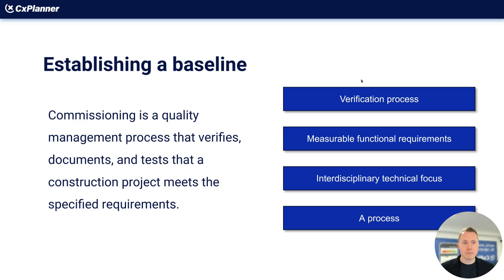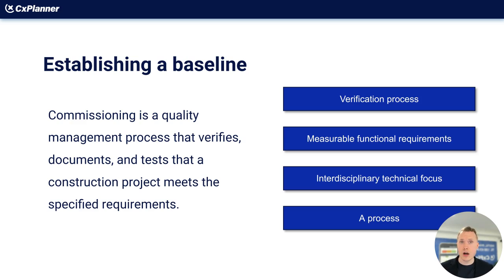The second item is measurable functional requirements. Every requirement in the commissioning process must be measurable — strictly defined so everyone knows when a requirement is fulfilled. Without those requirements, you don't have a commissioning process, because when you're doing testing or verification, you need to do it against something. In commissioning terms, this is often referenced as the owner's project requirements, or the OPR.